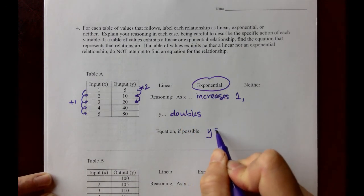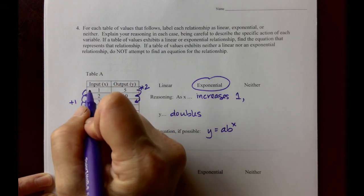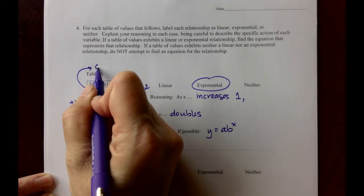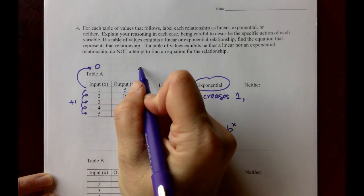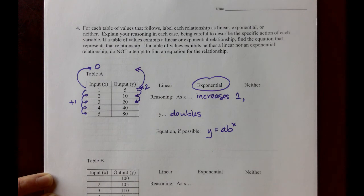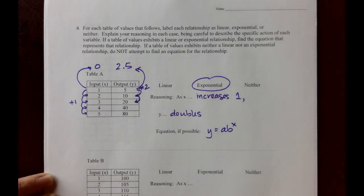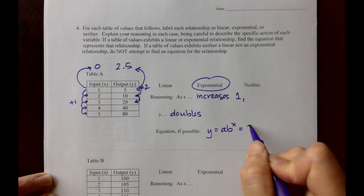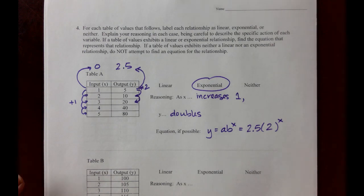Our equation needs to look like y equals a b to the x, where a is the y-intercept. I don't have that in the table, but I can find it by going backward in the table. So if I go backward in the x's to x equals 0, I can go backward in the y's by dividing by 2 instead of multiplying by 2 to get a y value of 2.5 or 2 and a half. So our equation should look like y equals 2.5 times 2 to the x, and that 2 for a base comes from the doubling action that we get.